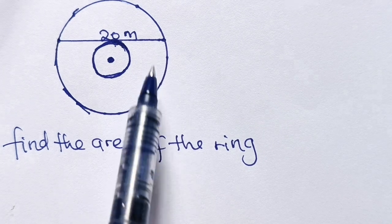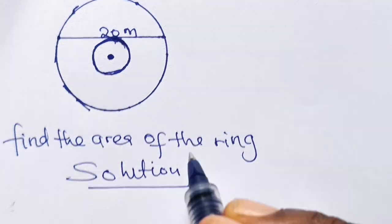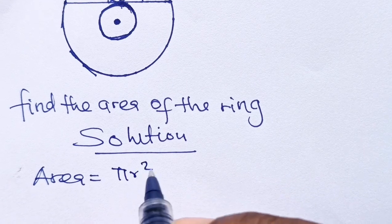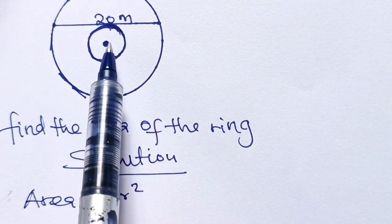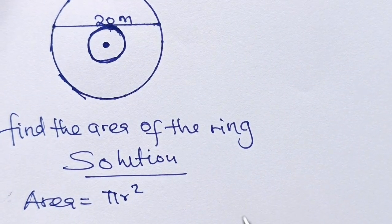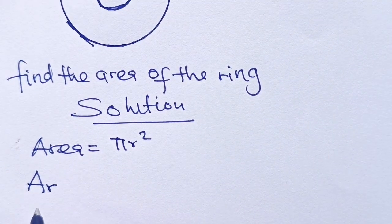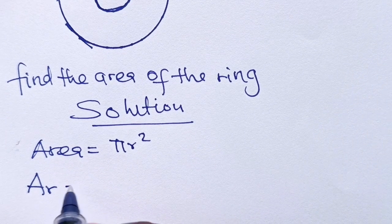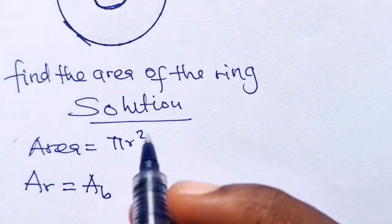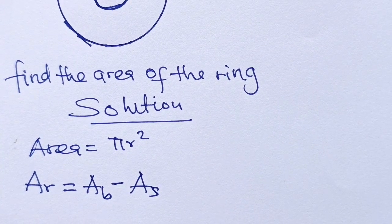The first thing we need to note is the area of a circle. The area of a circle is equal to π r squared. So if we can get the radius of the smaller circle and the radius of the larger circle, our problem is solved. To get the area of the ring, let's call it A_r. The area of the ring equals the area of the big circle (A_b) minus the area of the smaller circle (A_s).